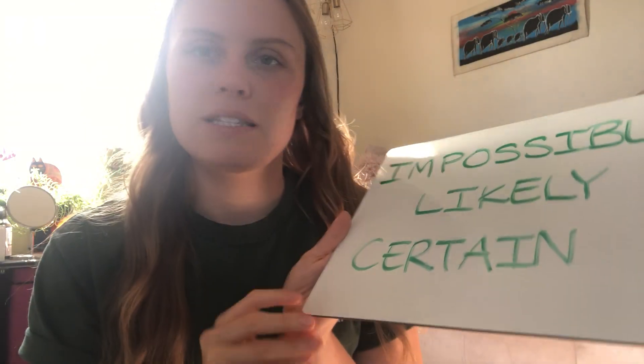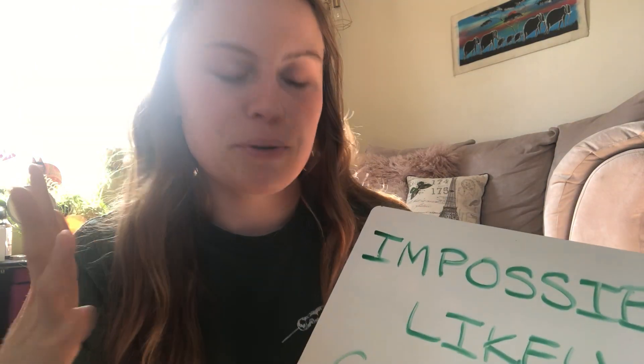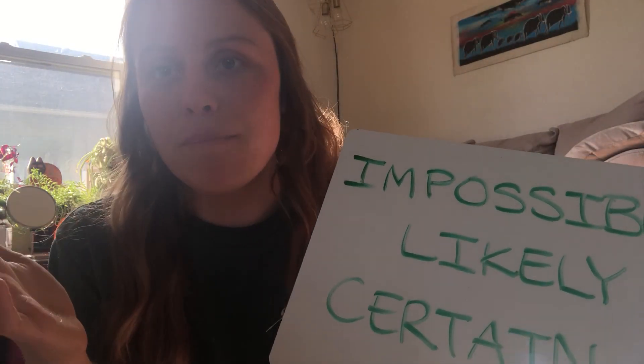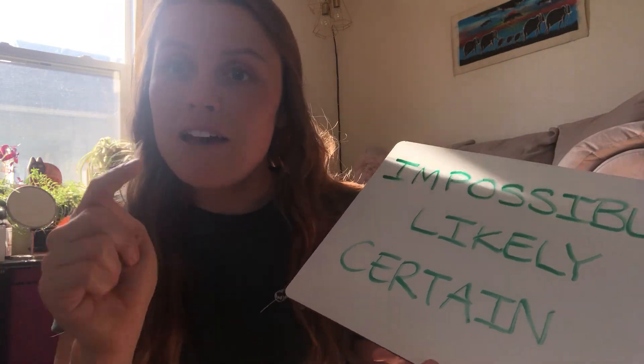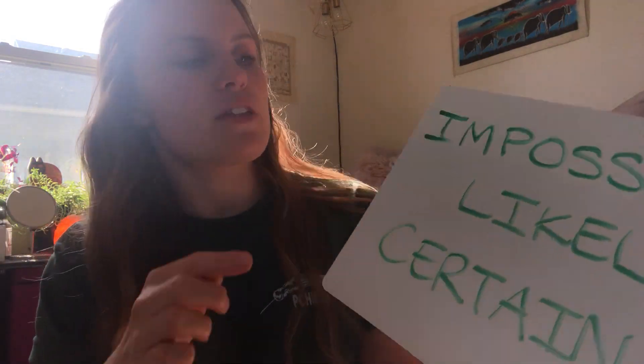We're going to use them in real life and in math today in this video. Impossible means that something cannot happen — it's not possible at all. Likely means that it might happen; there's a chance it could happen, maybe 50/50 — it may or may not occur. Certain means that it will most definitely happen — it is possible and it will happen.